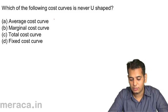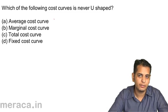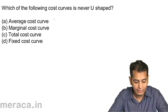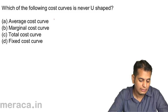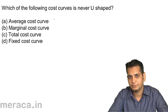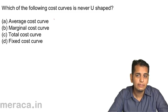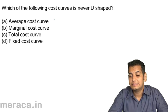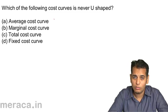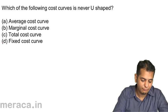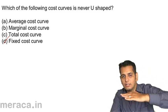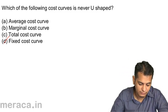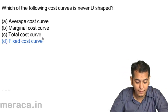Which of the following cost curves is never U-shaped? A. Average cost curve. B. Marginal cost curve. C. Total cost curve. D. Fixed cost curve. All cost curves are generally U-shaped except the fixed cost curve. The fixed cost curve is always parallel to the x-axis.